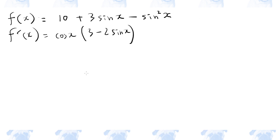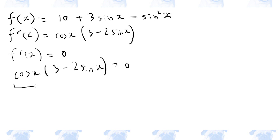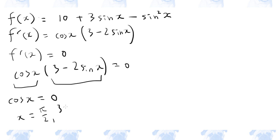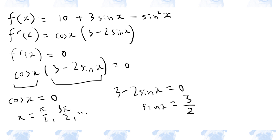This can be factorized. Now, to find the minimum, we need to let f dash be equal to zero. So either this part or this part is equal to zero. When cosine x is equal to zero, x is pi over two, three pi over two, and so on. If three minus two sine x is zero, sine x equals three over two. But remember, sine x is between minus one and one, so there's no value of x that satisfies this condition.